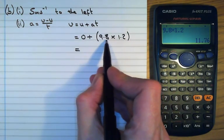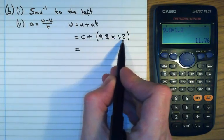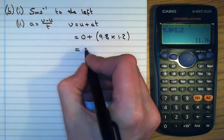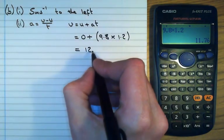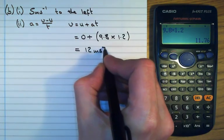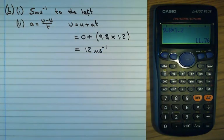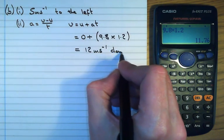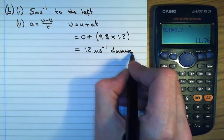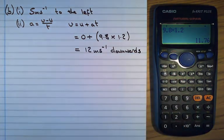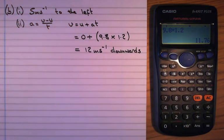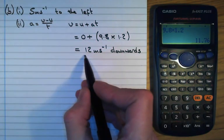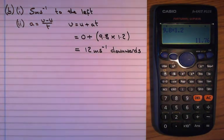That value is given to two significant figures, as is the time, so we round to two significant figures in the final answer — giving 12 meters per second. If the question asks for direction we'd add 'downwards,' but if it only asks for magnitude, 12 meters per second is the answer. That covers part B.